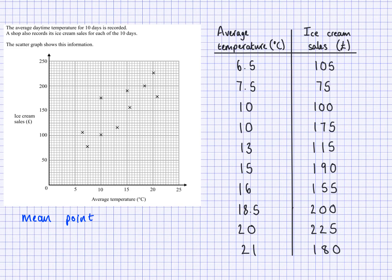You can think of this as x-bar and y-bar. Now, I've already done this for these values here — these are my x-values, that's my average temperature and it's here as well. I added them all up and because there's 10 of these values, I divide by 10 and that gave me 13.75.